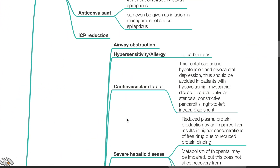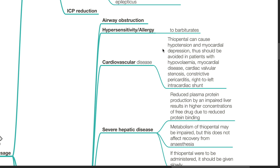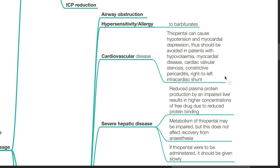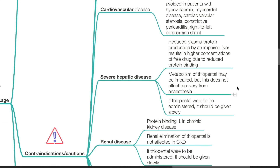Contraindications for thiopenthal include airway obstruction, hypersensitivity or allergies to barbiturates, and cardiovascular disease, as thiopenthal can cause hypotension and myocardial depression. It should be avoided in patients with hypovolemia, myocardial disease, cardiac valvular stenosis, constrictive pericarditis, and right-to-left intracardiac shunt. In patients with severe hepatic disease, the reduced plasma protein produced by an impaired liver results in higher concentrations of free drug due to reduced protein binding.